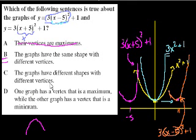Both of these graphs have the shape of 3x squared, but the one vertices is 10 to the left of the other one. So I think B is our choice. Let's read the other ones. The graphs have different shapes with different vertices. No, they have the same shape. They definitely have the same shape. They both have this 3x squared shape. One graph has a vertex that is a maximum, while the other has a vertex that's a minimum. No, that's not right. They both are upward facing. So they both have minimum points. So it's choice B.